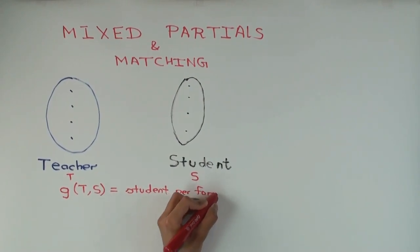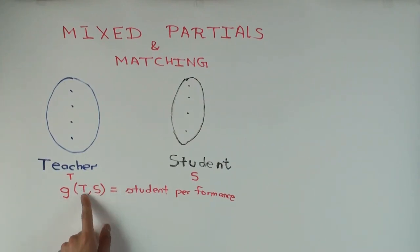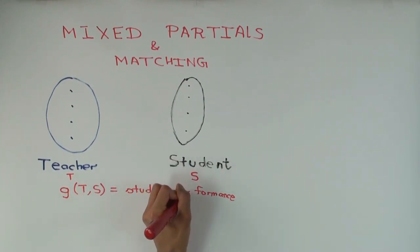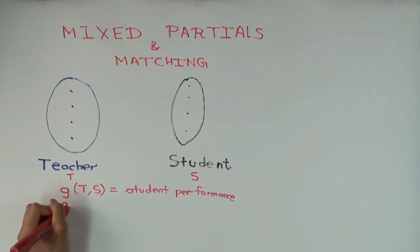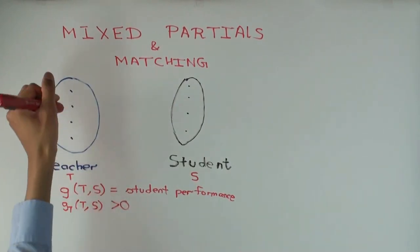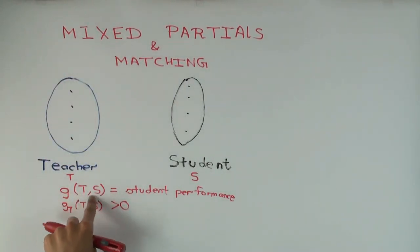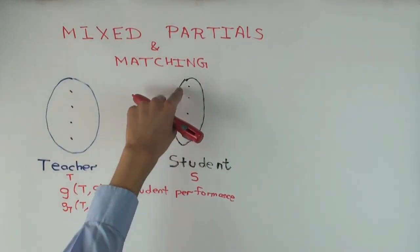Let's say I assume that g is increasing in both t and s. That means if I keep student quality constant and increase teacher quality, then student performance goes up. I'm assuming it's a continuous function of two variables, so there are actually only four different values of t and four different values of s — I'm just doing a continuous version.